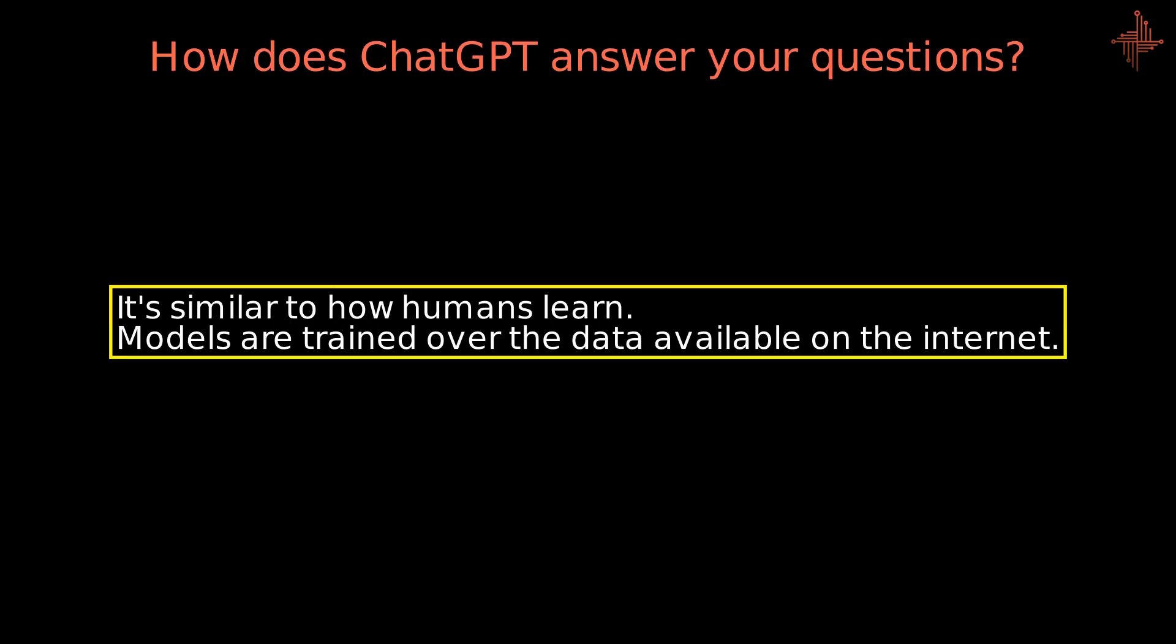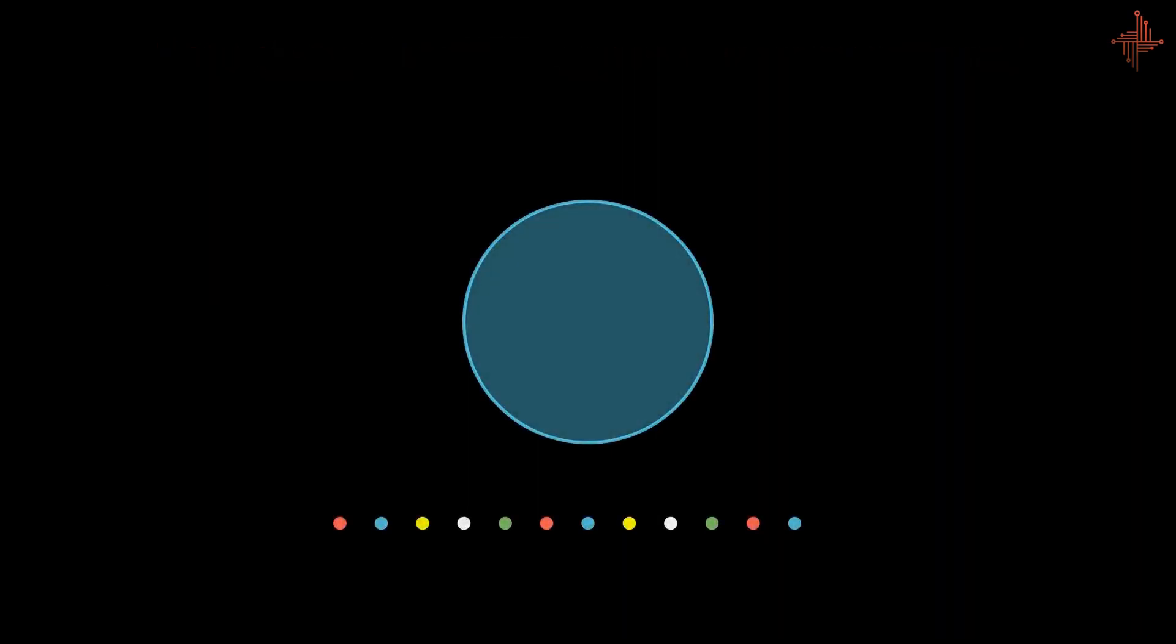We teach the model using a lot of data, helping it learn and know many things. When we are confident that we have taught it everything it needs to know for a specific task, we call it a trained model.